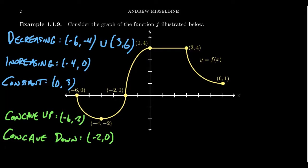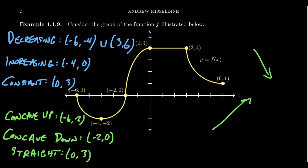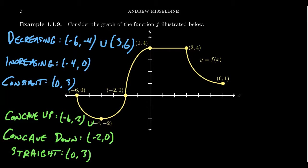When you go from 0 to 3, the graph is straight. Whenever you're constant, you necessarily have to be straight. But if the function is straight, that does not necessarily mean it's constant — for example, an increasing or decreasing line is straight but not constant. Then in the last sector, from 3 to 6, we have a concave upward shape again — notice how the curvature is going up even though the function is decreasing. So the concave up intervals are (−6, −2) ∪ (3, 6), and we record the concave down interval as (−2, 0).